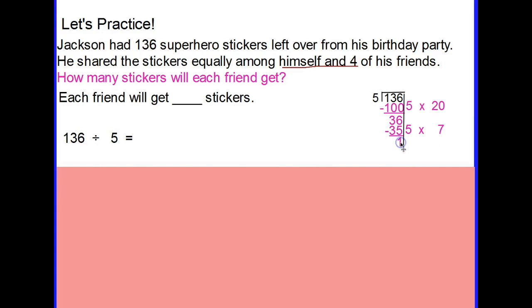We subtract and that will give us one. Seven and one would be our remainder. We cannot take out any more groups of five because one is less than five, so I know I can stop. Now I need to add 20 and seven and that's going to give me 27. I have a quotient and remainder: 27 remainder one. From here I'm going to go back and refocus my attention on the question.